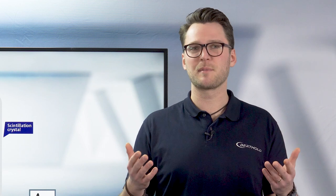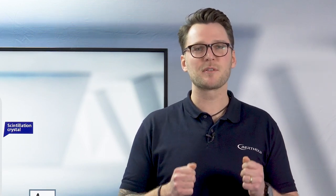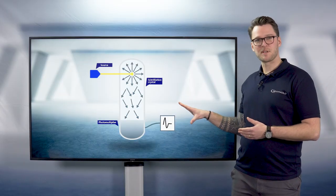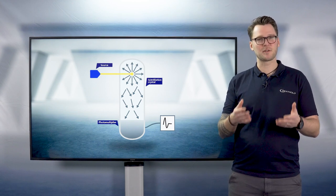For example, for a level measurement, a specified range of levels can be mapped onto current values from 4 to 20 milliamps. This analog signal can then be used by your DCS, your control system, or your PLC, your logic controller, for better automation of your process.